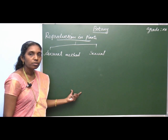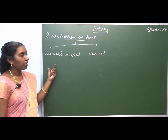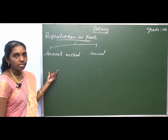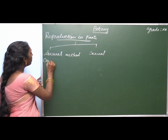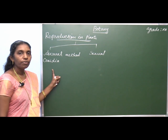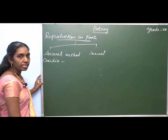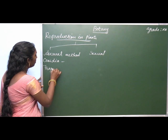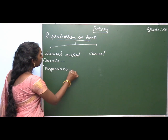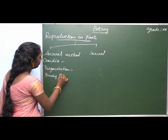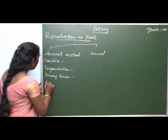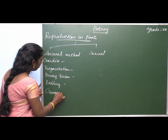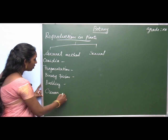There are a number of methods under asexual reproduction. For example: conidia formation, fragmentation, binary fission, budding, gemma formation, and regeneration.